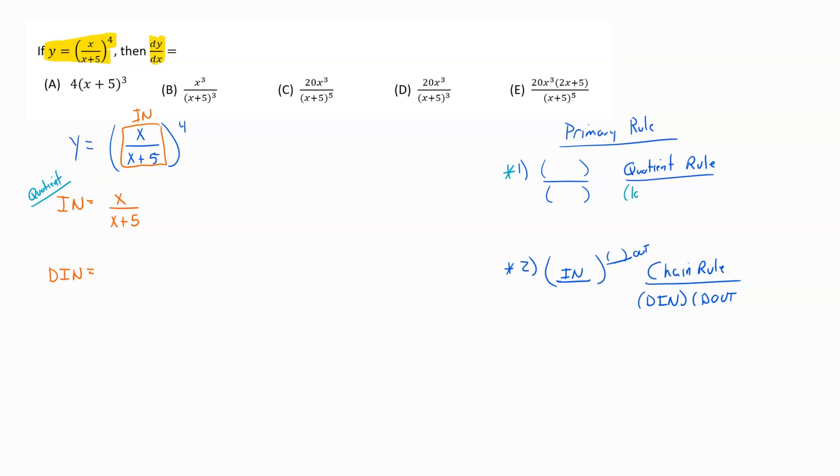My quotient rule recipe goes low d high minus high d low, all over the low squared. So d high means find the derivative of the high piece. d low means find the derivative of the low piece. I call the top piece the high piece and the bottom the low piece. In this problem, my high would be x and my low would be x plus 5.